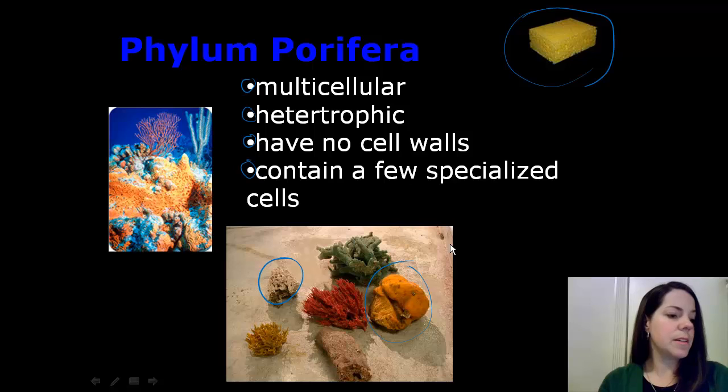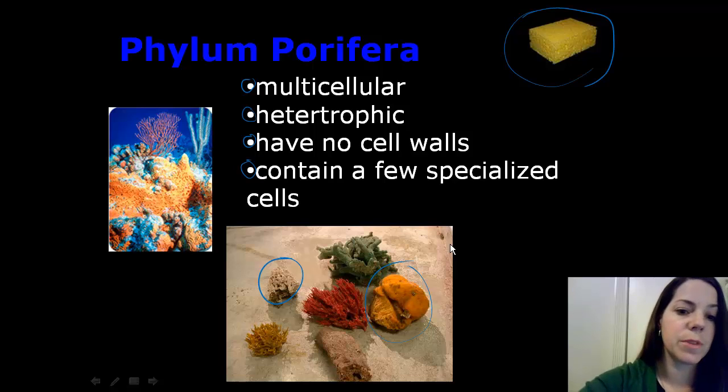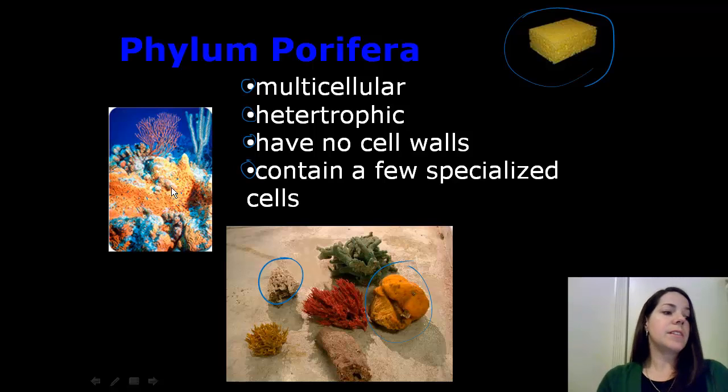So Porifera means pore bearers in Latin, as sponges have tiny openings, or pores, all over their body. So you can see in this diagram here, all the tiny pores. There are 10,000 species of sponges, and 150 of those species are freshwater. The rest of the 8,500 species live in saltwater in marine environments.